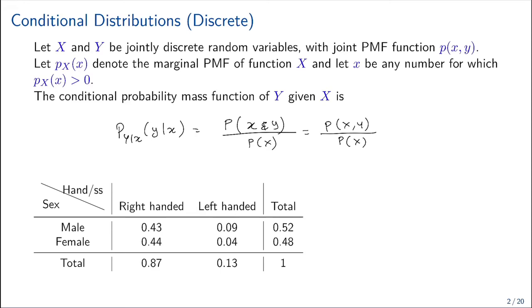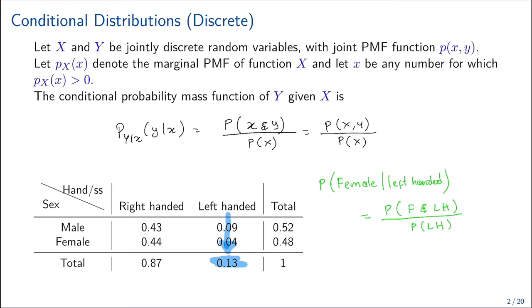The joint distribution is given by the intersection of variables x and y. For example, if we want to compute the probability of being female given left-handed, that probability equals the probability of the intersection of female and left-handed divided by the probability of left-handed. The probability of left-handed is the sum of that column, and replacing the values we have 0.04 divided by 0.15, which equals 0.3.